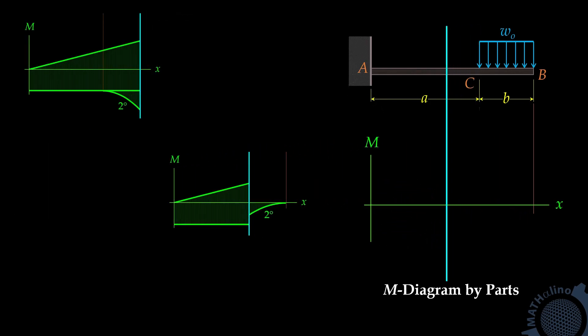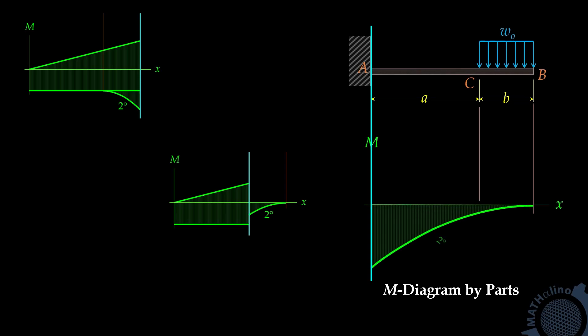Now, let us take point A as our moment center. The advantage of taking point A as our moment center is that we don't need to calculate the reactions, because at point A, the moment effect of RA and MA is zero. Due to uniform load alone, this would be the shape of the moment diagram by parts — but actually, this is wrong. Why is this wrong? In making the moment diagram by parts due to uniform load, the load must be continuous from the moment center to the end of the load. In this case, there is no load between A and C, and our uniform load is not continuous from A to B.